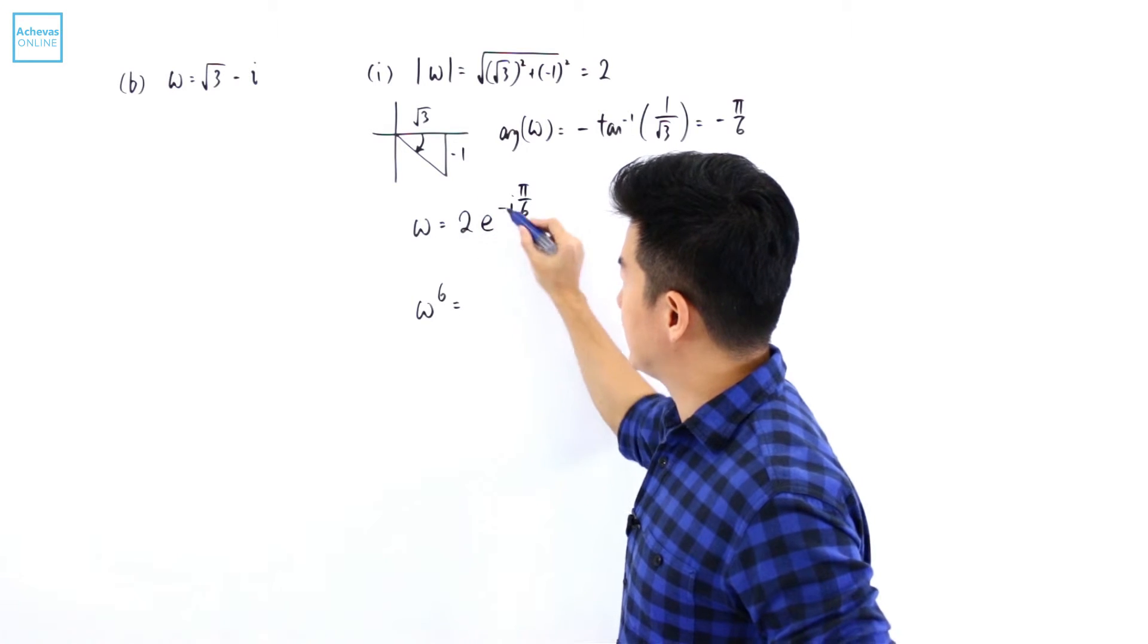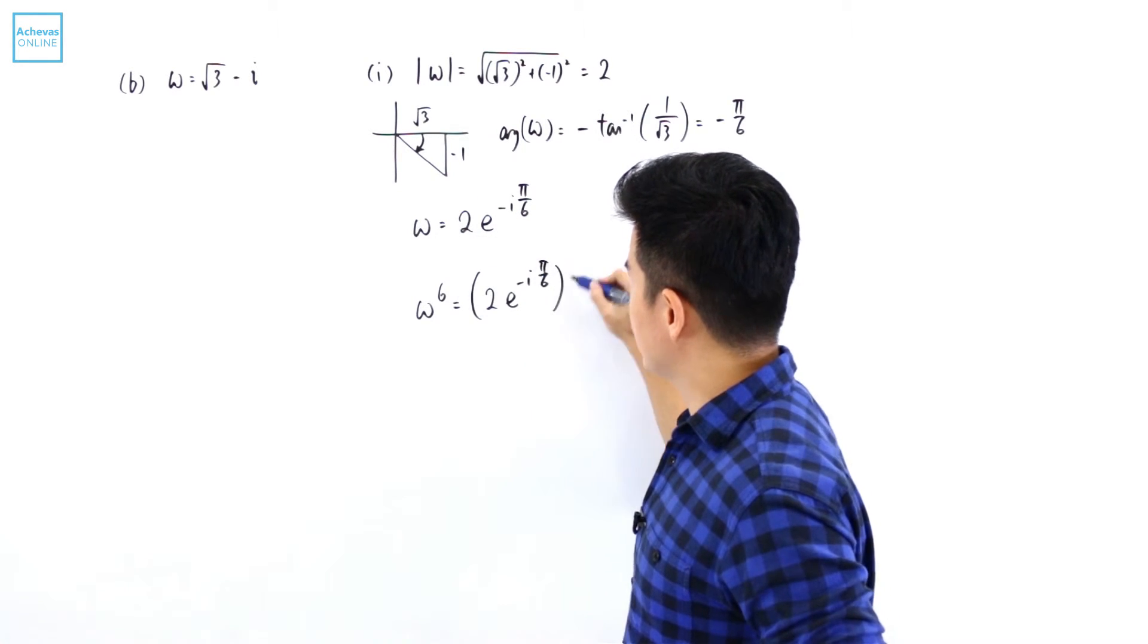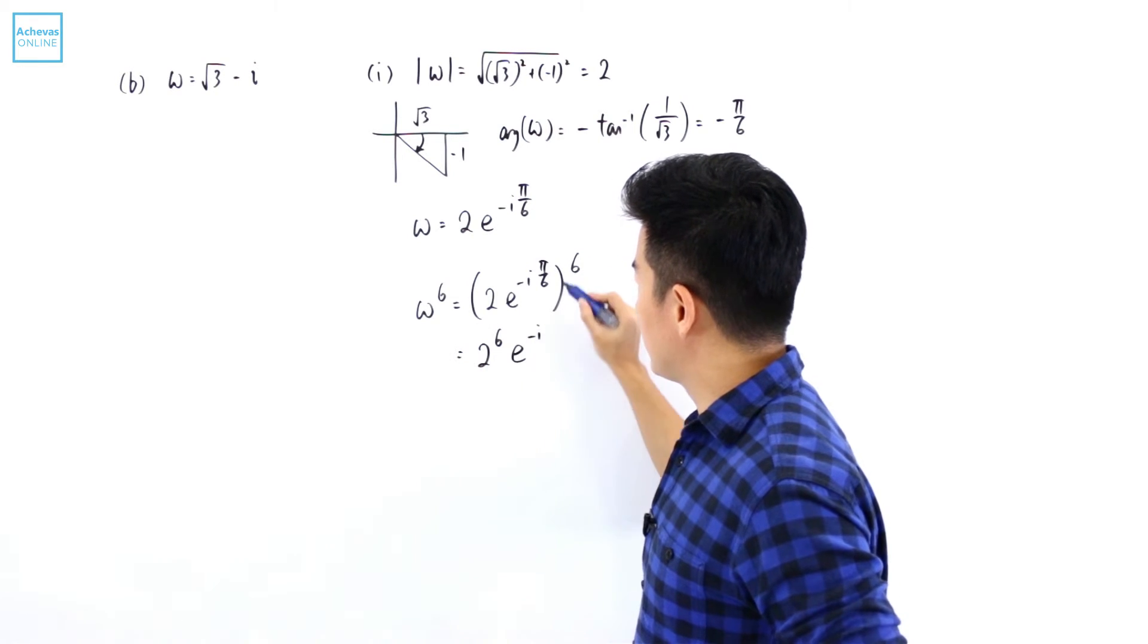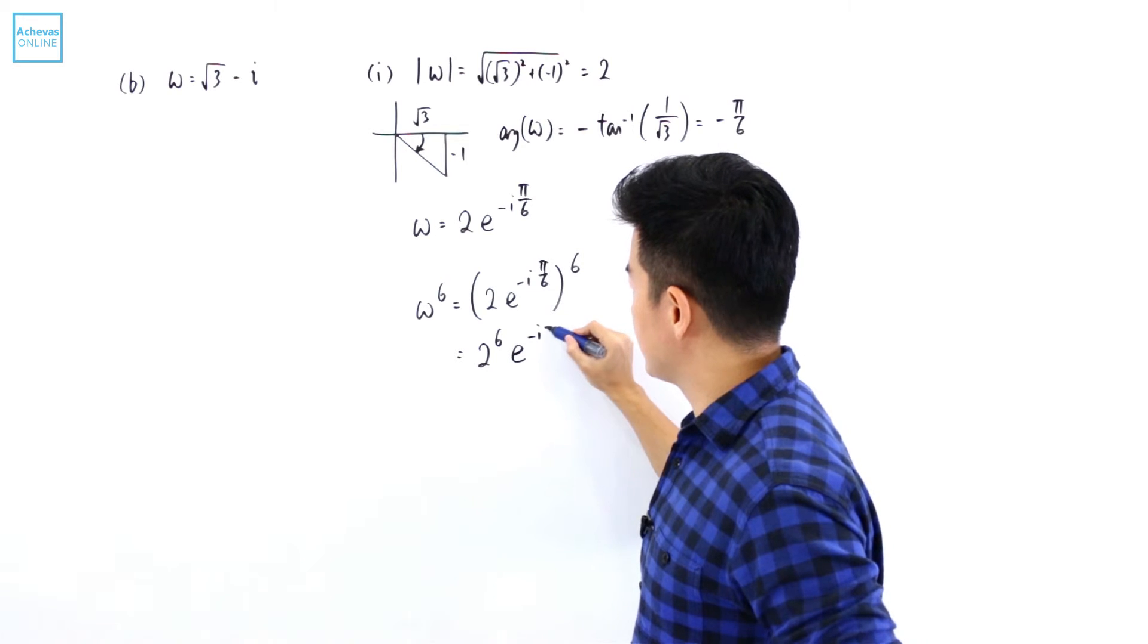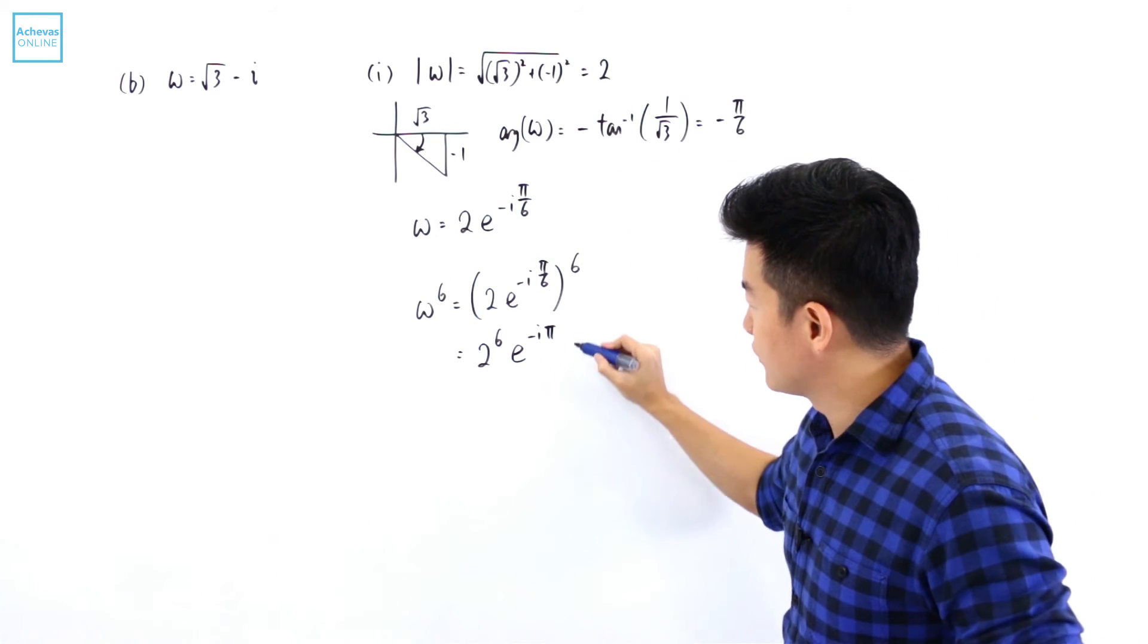And w to the power of 6 will be this 2 e to the power of minus i pi over 6 to the power of 6. So it is 2 to the power of 6 e to the power of minus i pi over 6 times 6. It is minus pi. 2 to the power of 6 is 64.